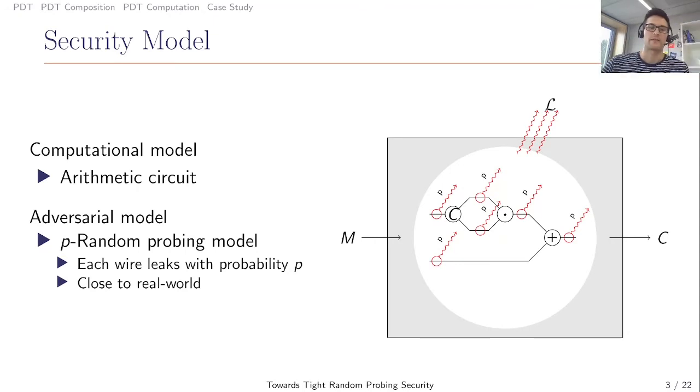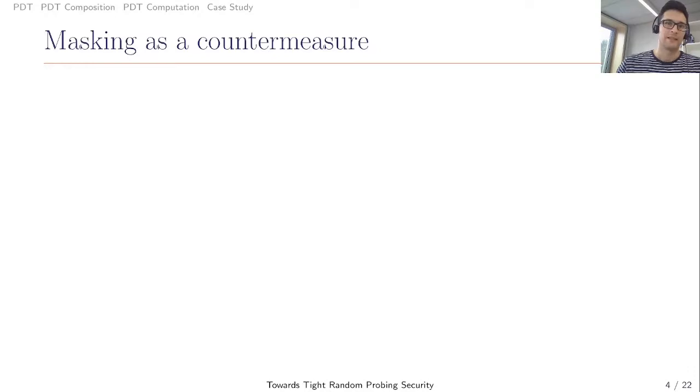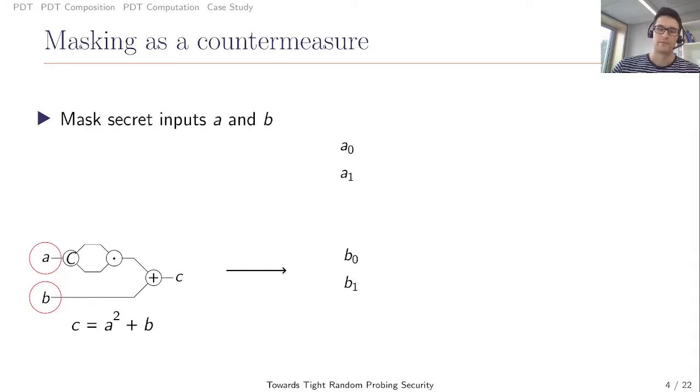Now we can use the model to try to protect circuits against leakage. We take the example circuit and assume that it gets as inputs the secrets A and B. It first copies A and multiplies it, which is a simple square operation, and then it adds B afterwards. The result is C. To protect the secrets against leakage, we first have to secret-share the values A and B. For example, for N equals 2, A is shared into A0 and A1, and B is shared into B0 and B1.